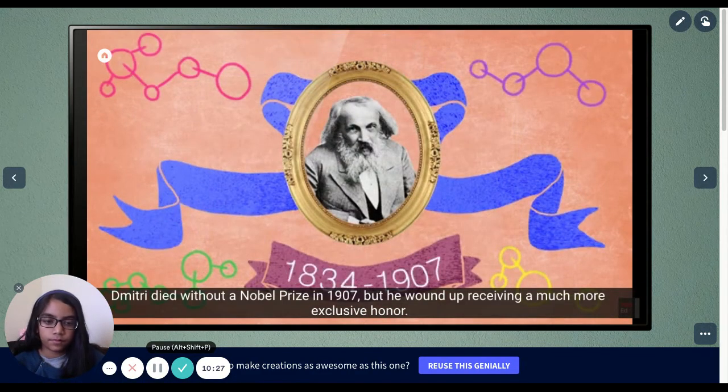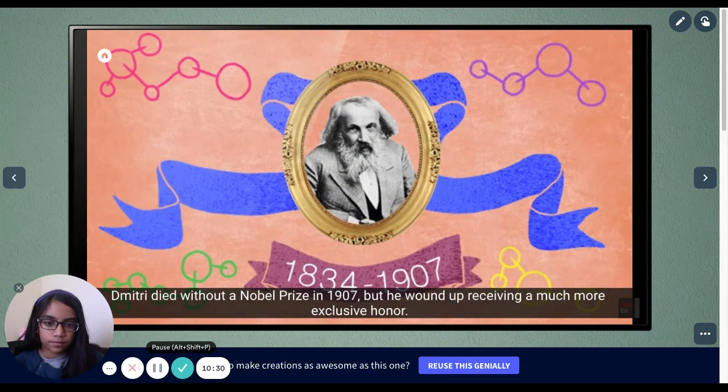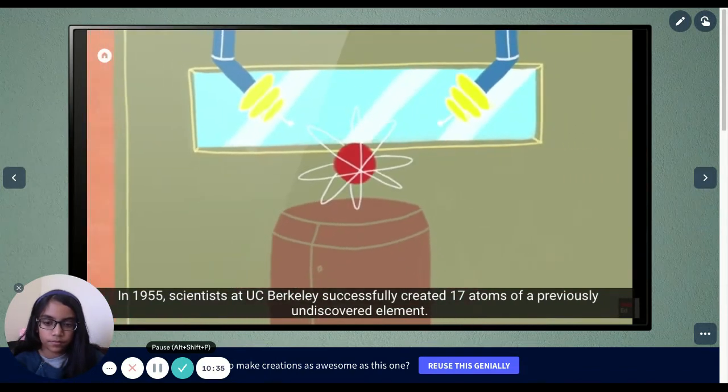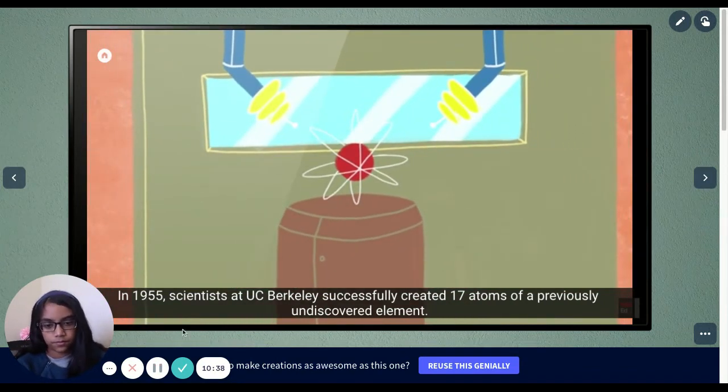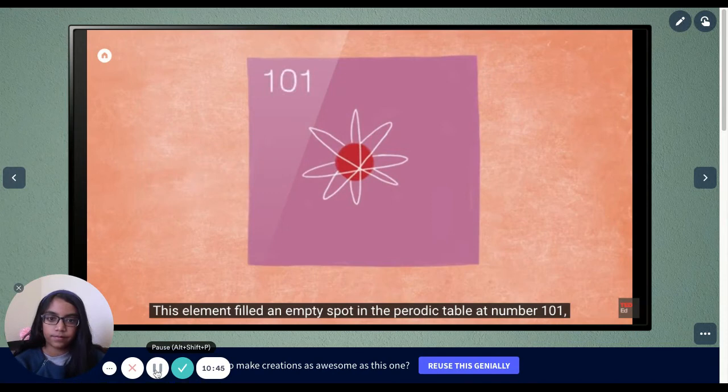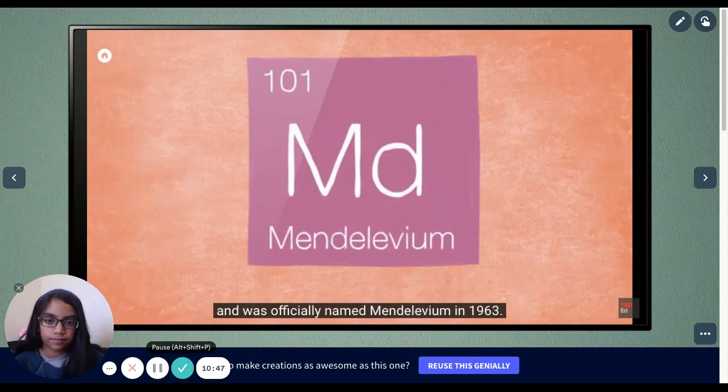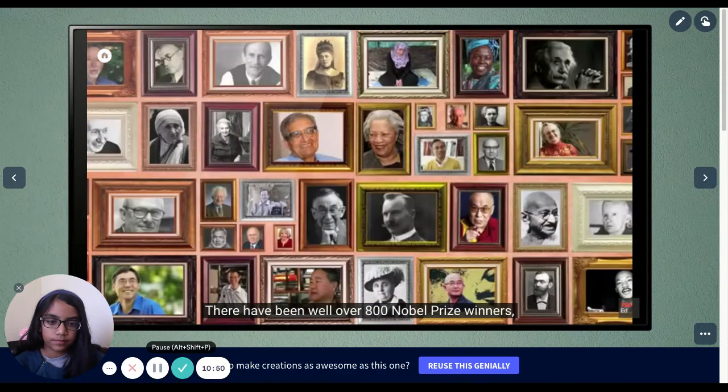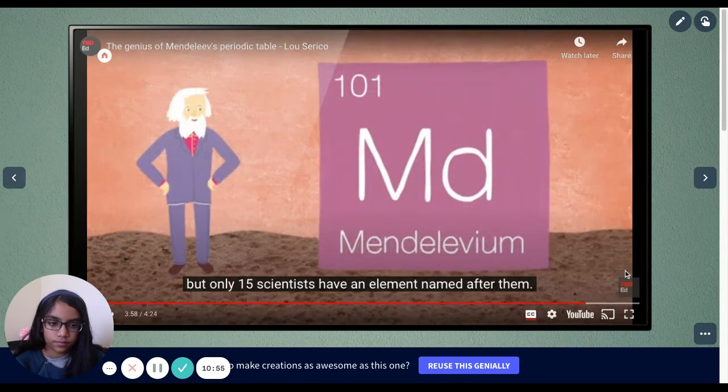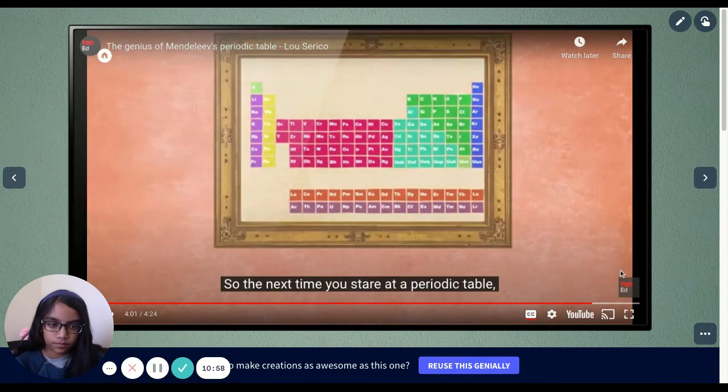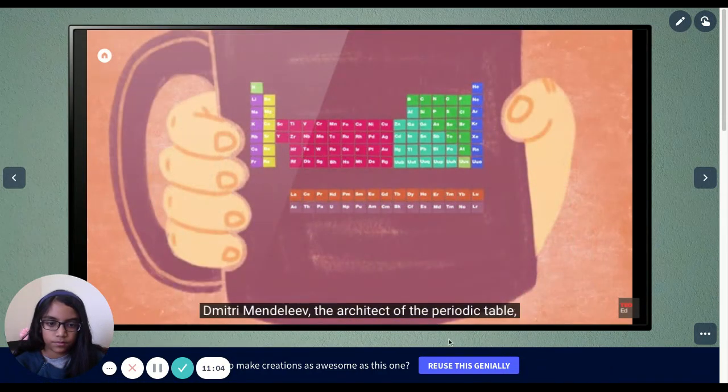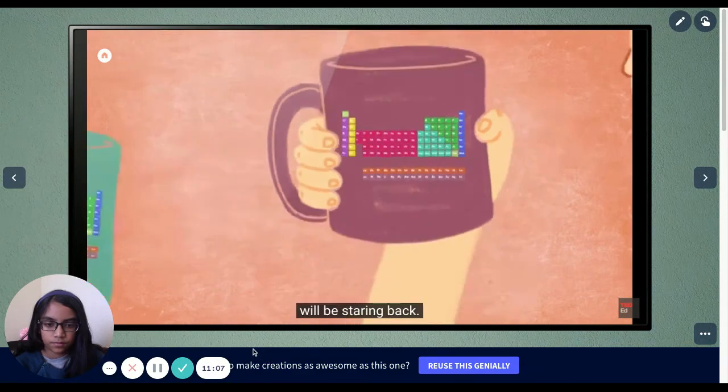Dimitri died without a Nobel Prize in 1907, but he wound up receiving a much more exclusive honor. In 1955, scientists at UC Berkeley successfully created 17 atoms of a previously undiscovered element. This element filled an empty spot in the periodic table at number 101 and was officially named Mendelevium in 1963. There have been well over 800 Nobel prize winners, but only 15 scientists have an element named after them. So the next time you stare at a periodic table, whether it's on the wall of a university classroom or on a $5 coffee mug, Dimitri Mendeleev, the architect of the periodic table, will be staring back.